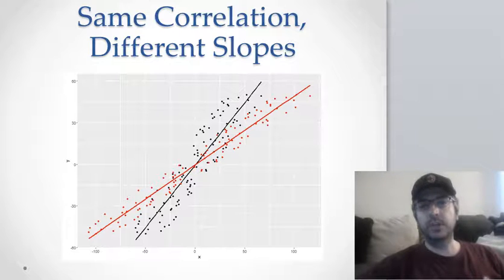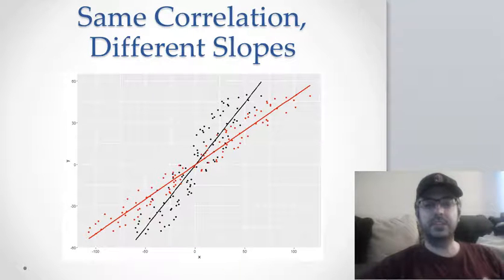So if you ran the correlation coefficient, you'd get about 0.92 for each of them. Strong correlation. Life is good. But it doesn't tell you how much y increases as x increases.